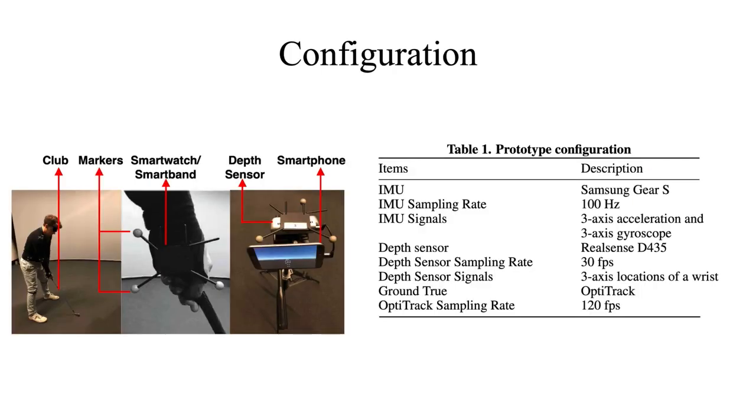Here's our configuration. From the image on the left, we can see that our system consists of a depth sensor, which is the RealSense D435, and a smartphone, which is Samsung S7. And we use the Samsung Gear S as the smartwatch or smartband. We can take it as the IMU because it sends the IMU signals inside the watch. And we use markers on the ground to give its label ground truth, and we collect the data based on a real club.